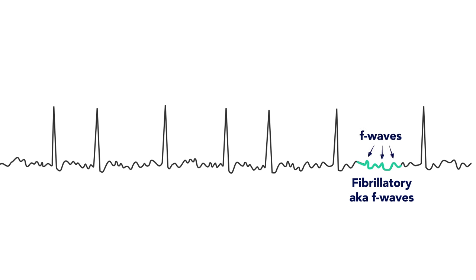You may see fibrillatory or F waves between QRS complexes representing the disorganized atrial activity. Regardless, compared to normal sinus rhythm, in atrial fibrillation you'll see no distinct P waves.